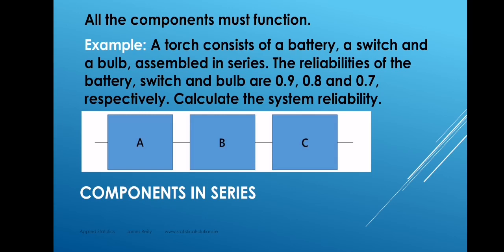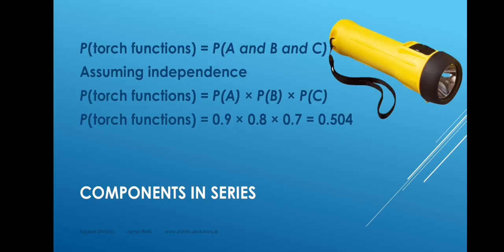So we want to calculate the system reliability for this system. Now because the components are in series and because all the components must work, the relevant word here is the word 'and.' We need the battery to work and the switch to work and the bulb to work. So the probability that the torch functions is the probability of A and B and C. If we assume independence, then we can replace the word 'and' with multiplication. Independence is a reasonable assumption.